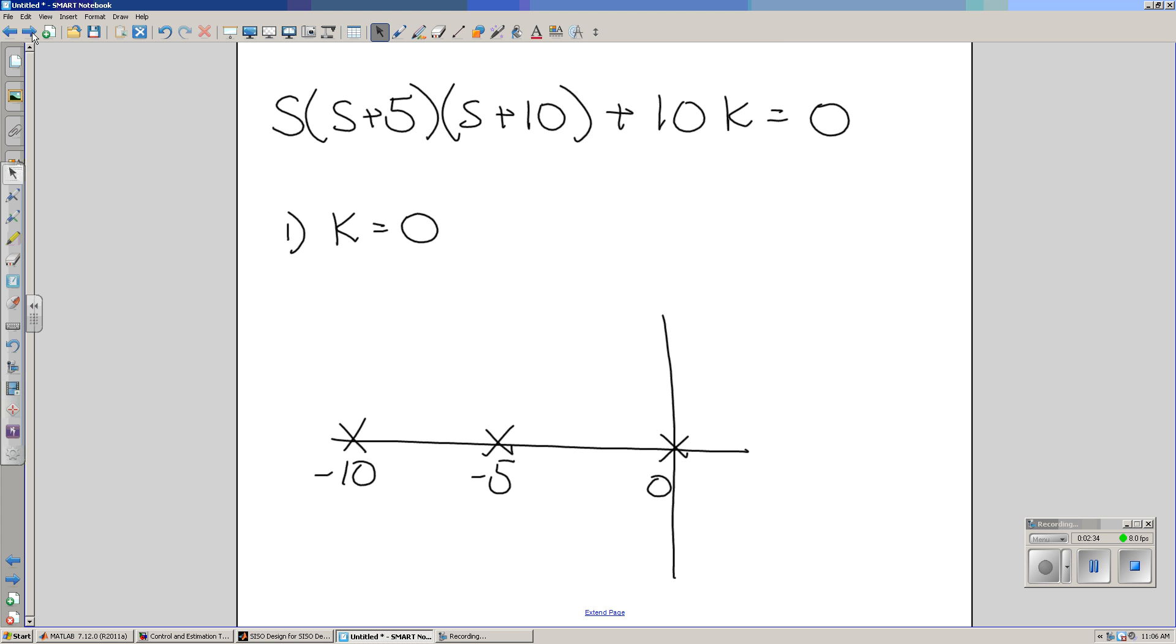Let's start with k equals zero, the simplest case. Fairly obviously, if k equals zero, this term goes away, and I'm just left with the open loop poles. Poles at zero, minus five, minus ten. That's how you start the root-locus plot. Put an x where the open loop poles are. If you add zeros, put an o through zero.